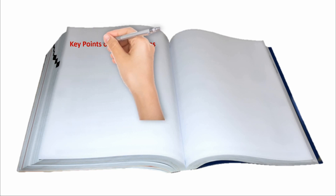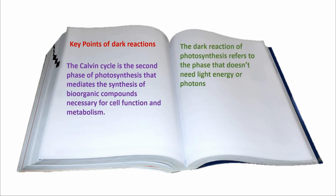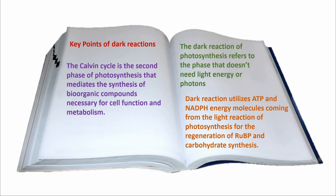Key points of dark reactions: The Calvin Cycle is the second phase of photosynthesis that mediates the synthesis of bioorganic compounds necessary for cell function and metabolism. The dark reaction of photosynthesis refers to the phase that doesn't need light energy or photons. Dark reactions utilize ATP and NADPH energy molecules from the light reactions for the regeneration of RuBP and carbohydrate synthesis.